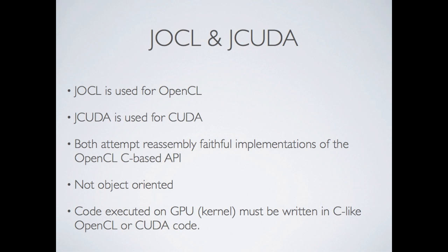Jokel and JCUDA are both fairly low-level APIs for interfacing with OpenCL and CUDA respectively. Both are similar to LWJGL in that the function names you're accessing are the same ones you see in the actual C implementation. However, you're forced to deal with a lot of the JNI wrapper overhead — data types, pointers, and that sort of thing — directly from Java. Neither of these two are object-oriented, and kernels must be written in the C99 syntax used for OpenCL kernels.